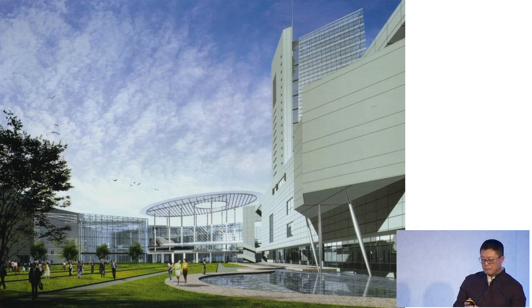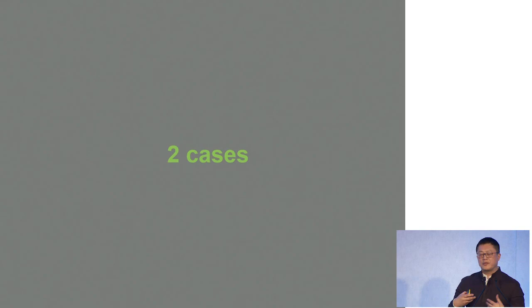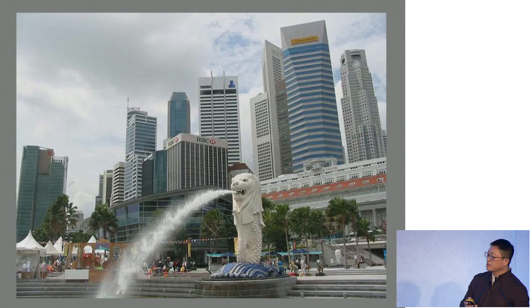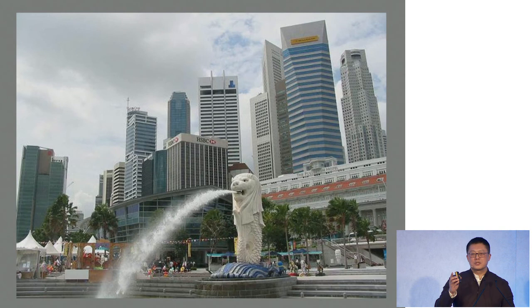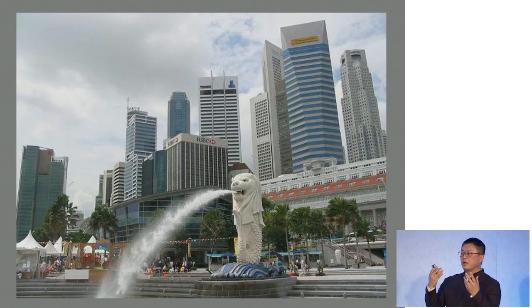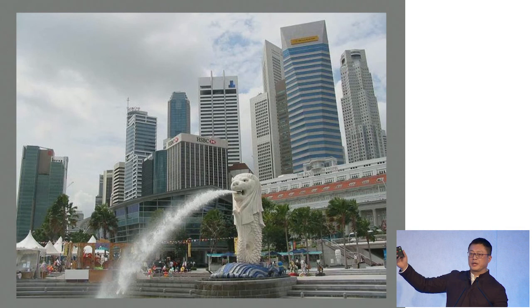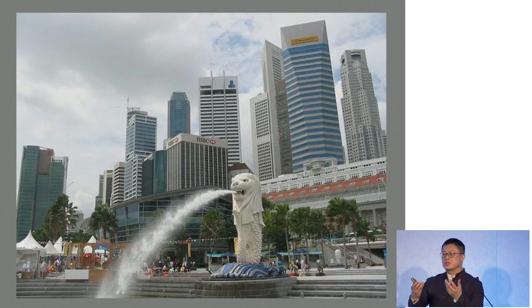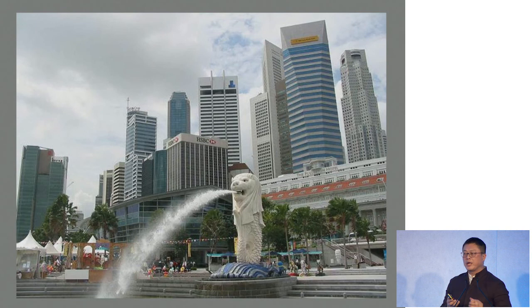Now I want to talk about two cases about why identity is important. The first case is Singapore. I taught in Singapore for eight years, so I know that tropical city very clearly. Singapore was established as a country in 1965 — two years younger than me. When Singapore was first established, they built a legend: the Merlion. For the Chinese, they are the sons of the dragon; in Singapore they are the sons of the Merlion. We need a legend to establish identity.